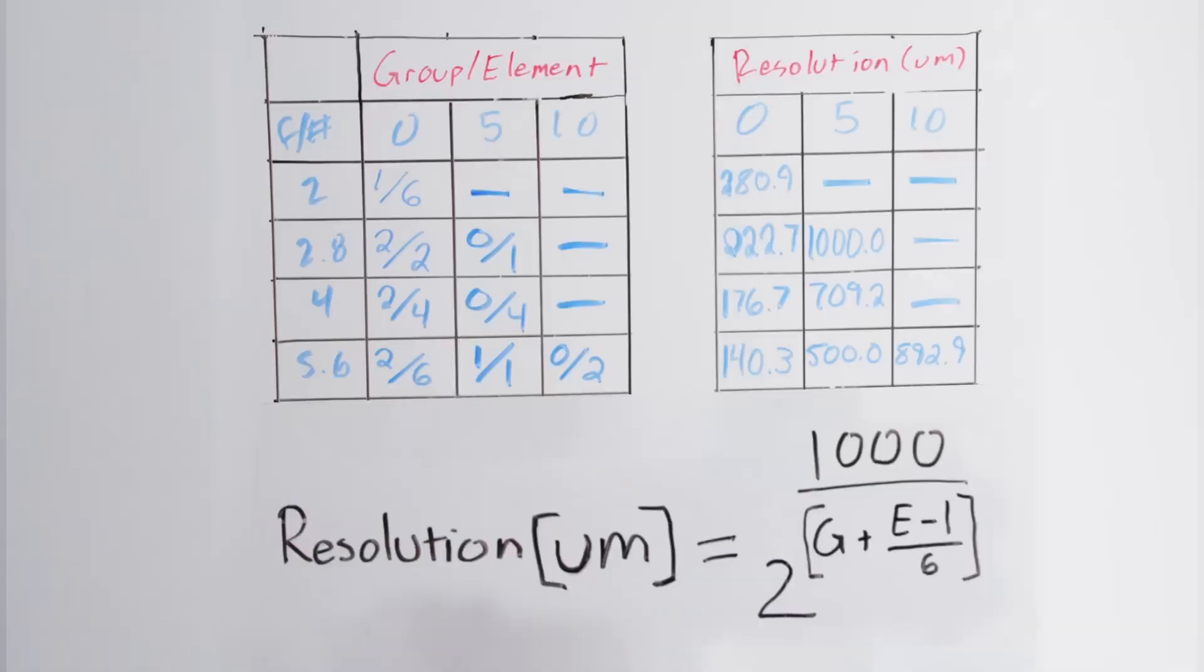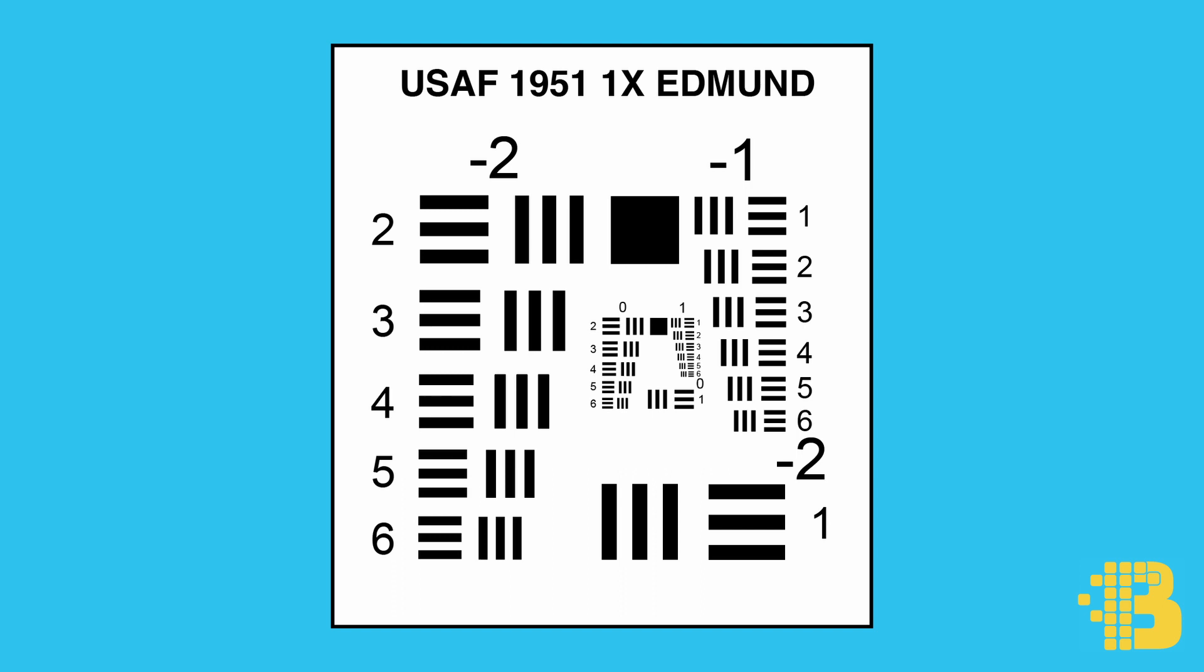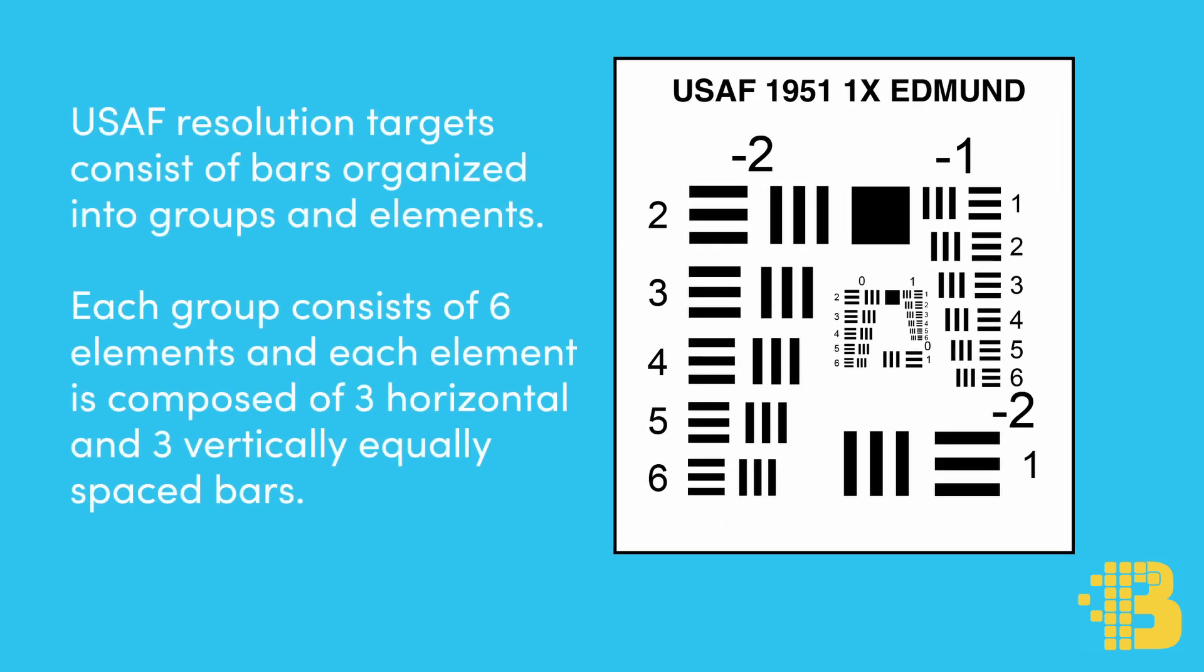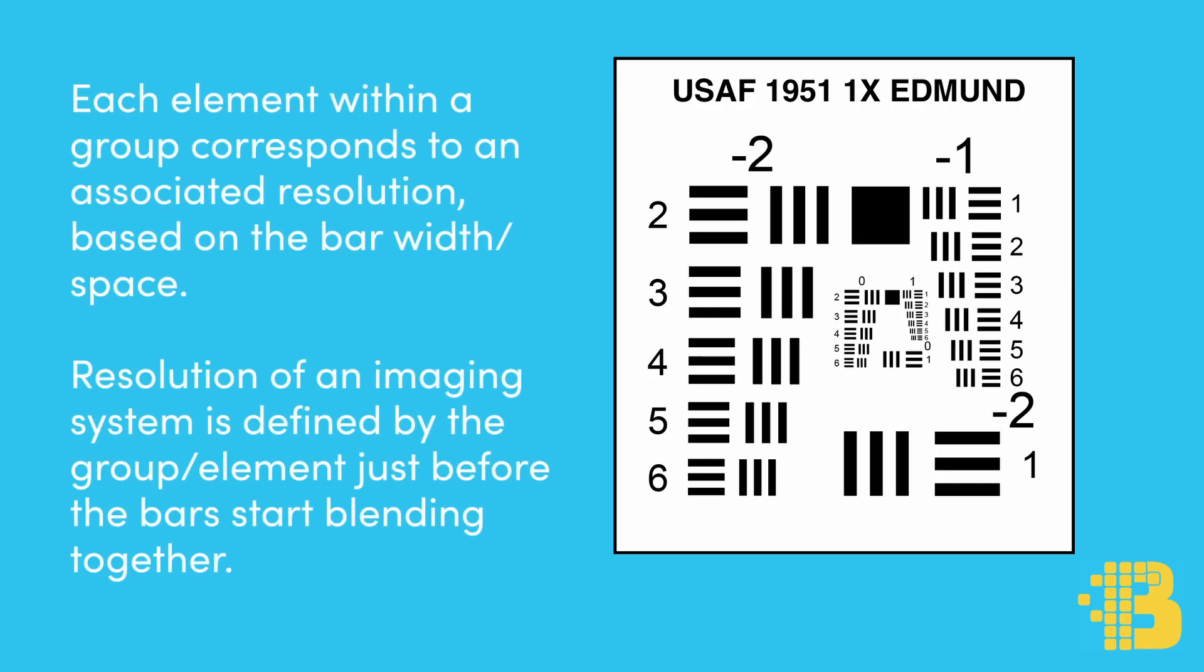Before we dig into our data, let's discuss what we looked at during our experiment, and how it helps us understand our system's resolution. First, we'll take a closer look at our 1951 USAF target. It consists of a series of horizontal and vertical bars that incrementally spiral and shrink in size. Each group of horizontal and vertical bars are given a group number and elements. These are essentially the coordinates.